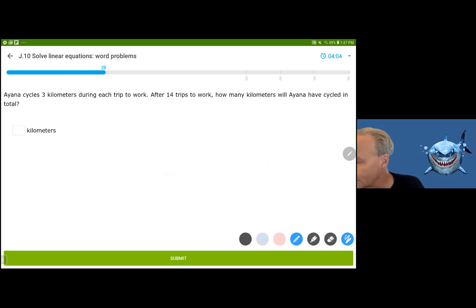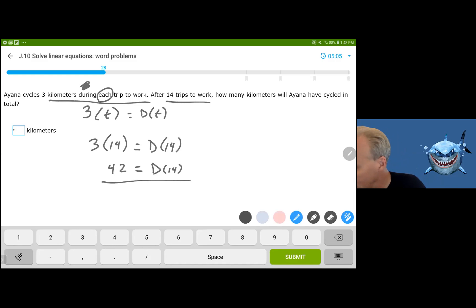Aiyana cycles three kilometers during each trip to work. After 14 trips to work, how many kilometers will she have cycled in total? So it says each trip. Again, the each is the multiplication. So it's three, three kilometers for each trip. And that's going to be equal to the total distance or maybe distance T. We could have called it K of T for the number of kilometers. And we want to know for how many trips, 14 trips to work. So we're interested in three times 14, which is going to give us the distance for 14 trips to work, which happens to be 42 kilometers. Again, that's the way to formally write functions. 42, sorry. I'm just going to put 14 in the line.